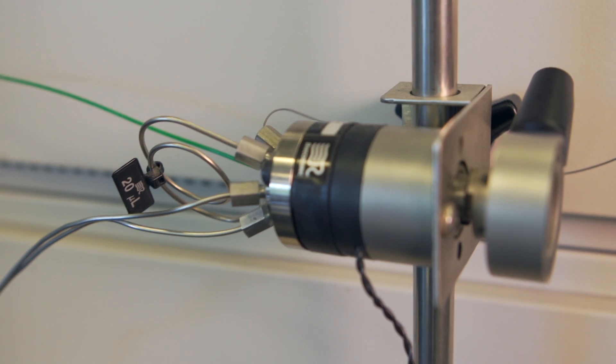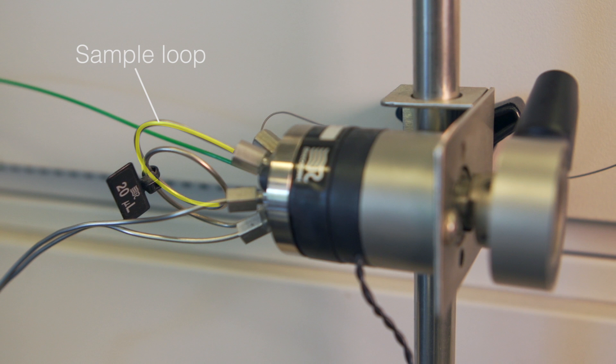The injected sample fills a length of tubing called the sample loop, which has a fixed volume based on the length and diameter of the tube.